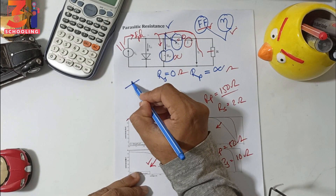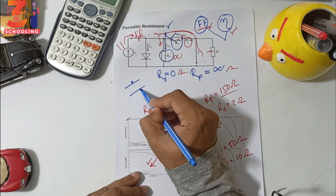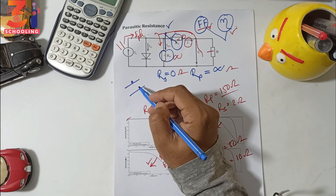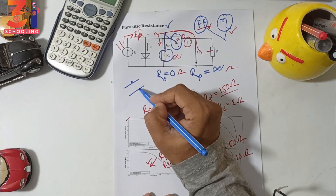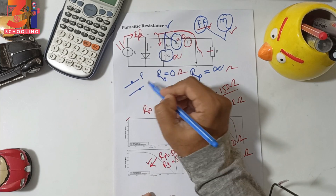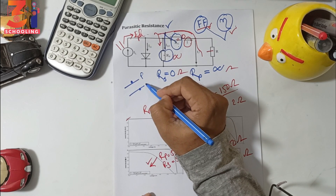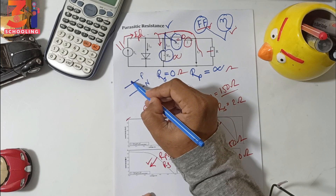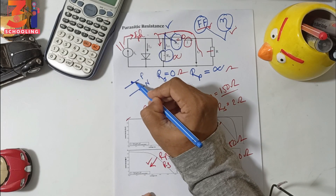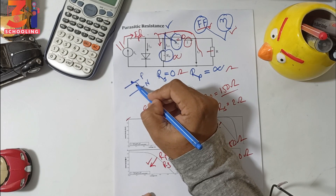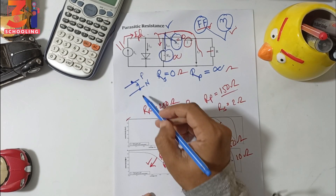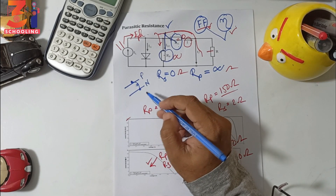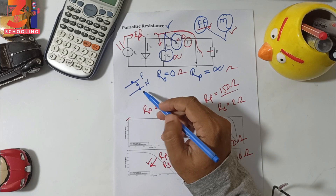In a solar cell, current flows from the top contact through the rear contact. The solar cell is a PV cell with a p-n junction made of semiconductor material. Current flows through two materials in the device, and there is a contact resistance between the silicon and the metal.